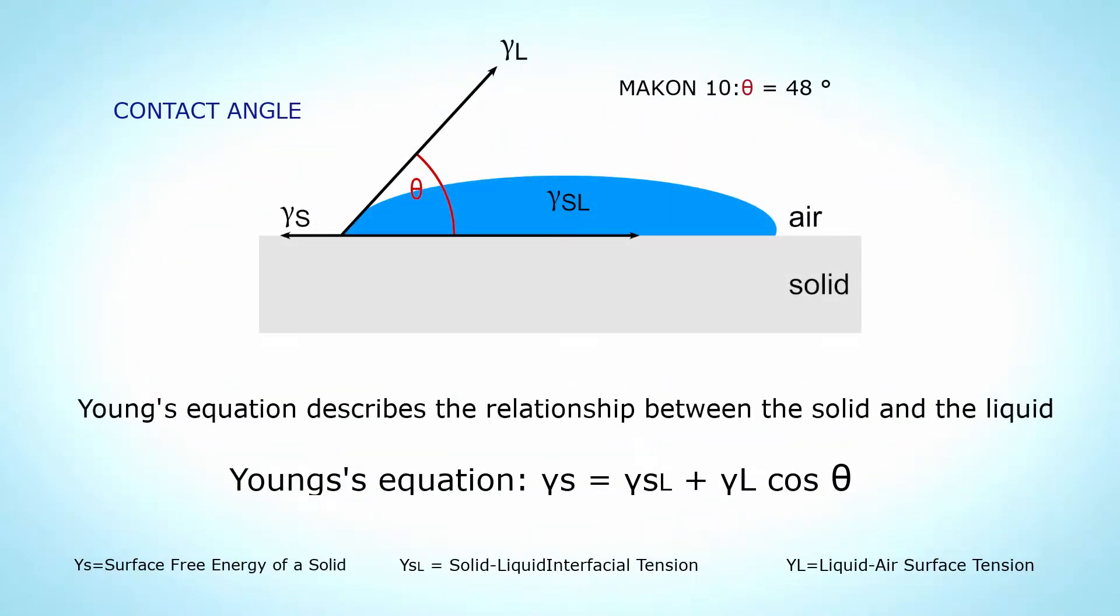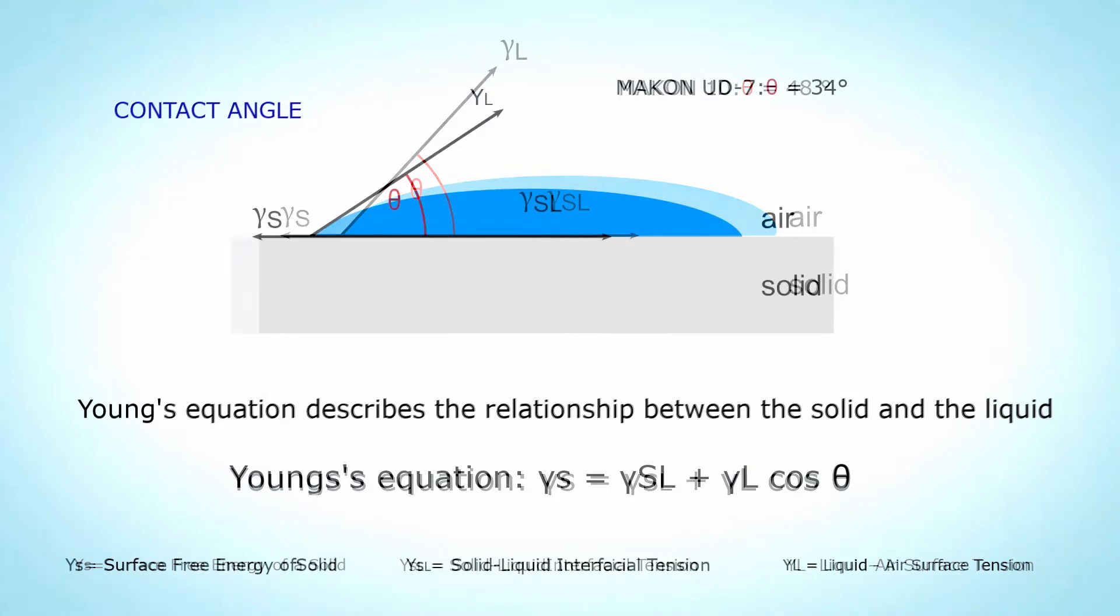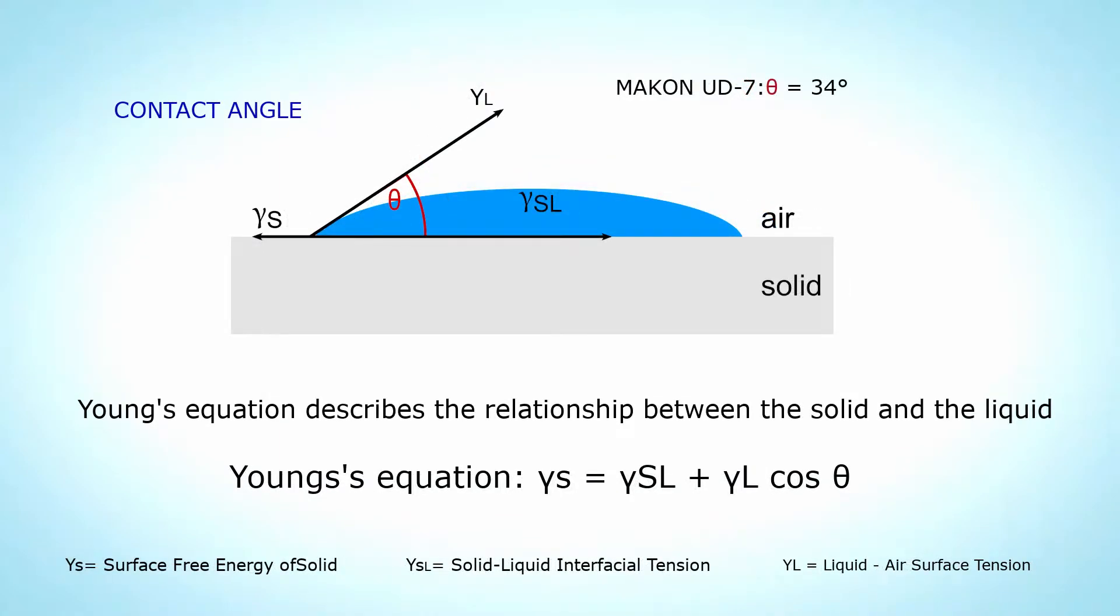Another, more surface-specific approach is to measure contact angle, which demonstrates the affinity of a liquid for a particular solid. Smaller contact angles indicate greater affinity and better wetting.